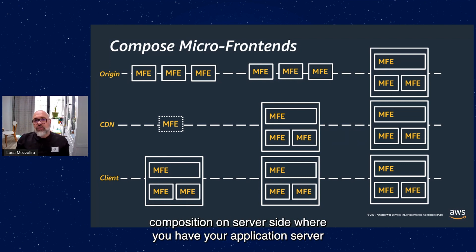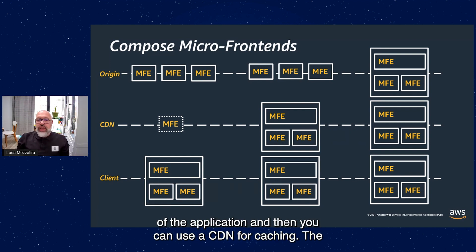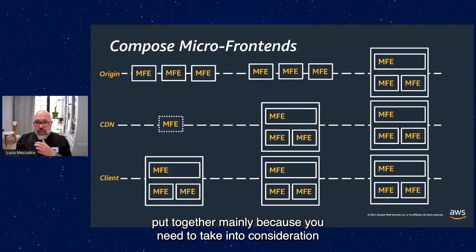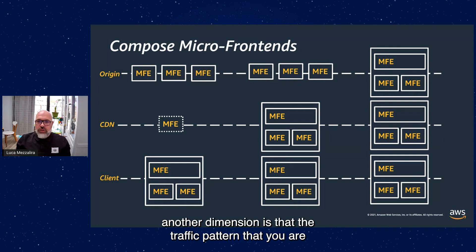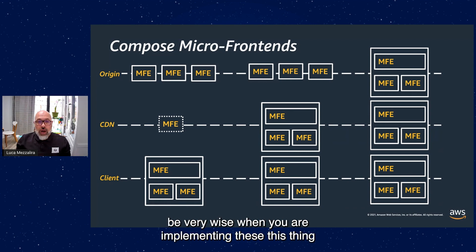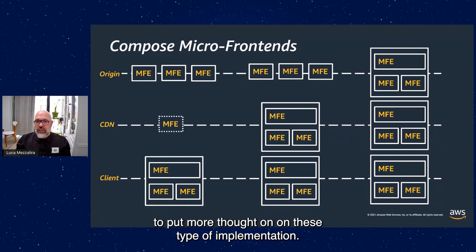The third option is server-side composition, where your application server composes and server-side renders parts of the application, and you use a CDN for caching the final result. It's probably the most flexible and most powerful, but also the most complex to put together — you need to consider traffic patterns, burst traffic, and how you cache content not only for static assets but also for microservice responses. You definitely need to put more thought into this type of implementation.